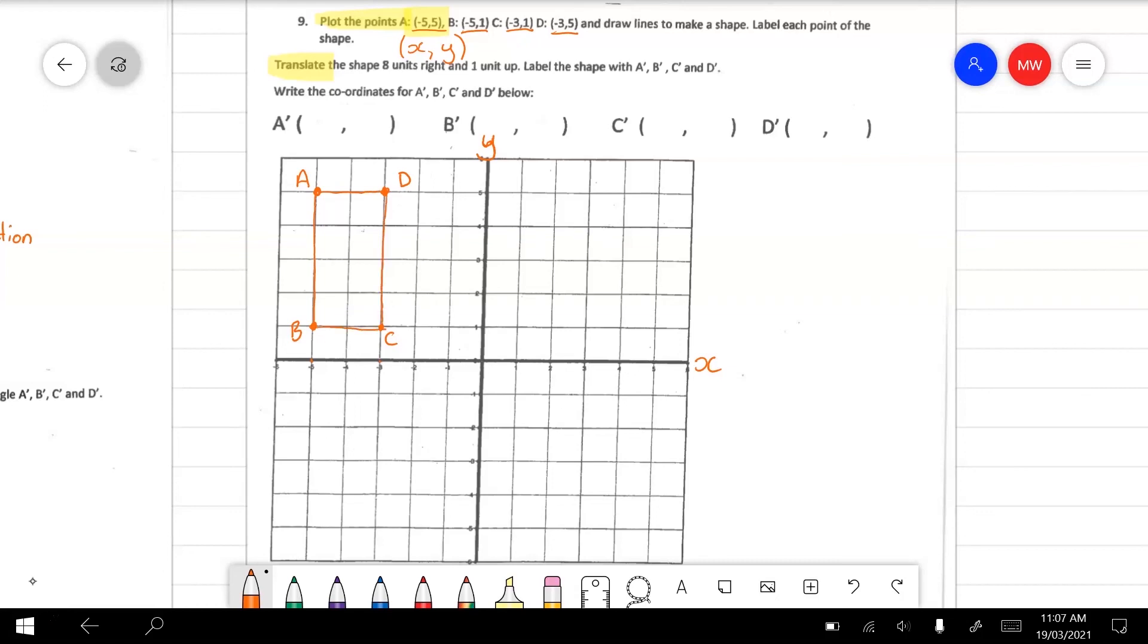Now I'm up to the second part of the question. It says that I need to translate the shape eight to the right and one unit up. So what I'm going to do is I'm going to choose one point. And in this case, I think what I'll do is I'll pick C. Because it's nice. It's clear. It's on the edge.